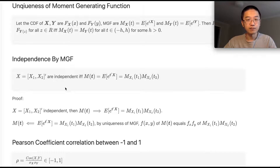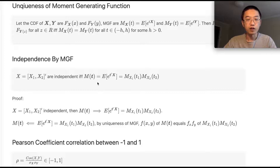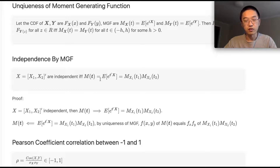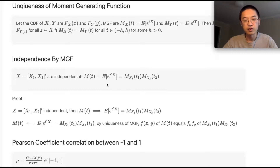The second property is that two random variables X₁ and X₂ are independent if and only if the moment generating function of the joint PDF of X₁ and X₂ equals the MGF of X₁ times the MGF of X₂. So if you can write the MGF as a product of individual MGFs then they're independent, and if they're independent then you can write it as such a product.